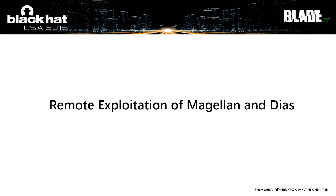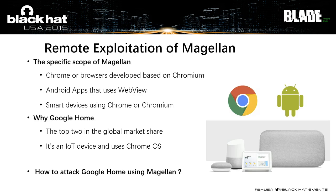Now I will continue with part three: remote exploitations of Magellan and DIAS. The possible affected products include Chrome, browsers developed based on Chromium, Android apps using WebView, and smart devices using Chrome and Chromium. We chose Google Home as our target because it is a smart speaker device with a large market share and uses Chrome OS.